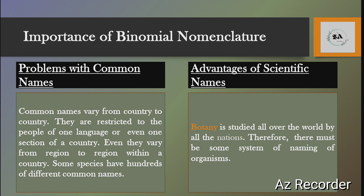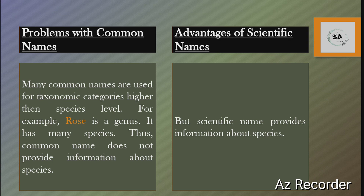As compared to the problems with common names, the advantages of scientific names are clear: botany is studied all over the world by all nations, so in botany there must be a system of naming plants. The next problem with common names is that they are used for taxonomic categories higher than the species level. For example, 'rose' is a genus — it has many species. Common names do not provide any information about the species level or below. But scientific names provide information about the species level and below.